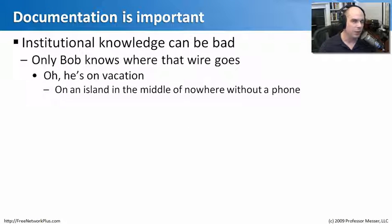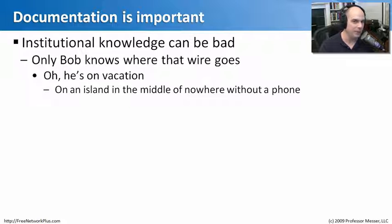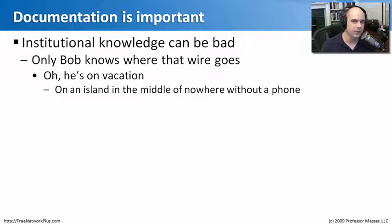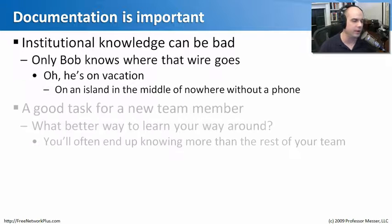Documentation becomes very important in larger environments where there is institutional knowledge — one person who knows how everything works. Bob knows where that wire goes, and only Bob happens to know. The bad part comes when Bob isn't there. Bob goes on vacation, somewhere in the middle of nowhere with no phone and no way to get in touch. Do we all just sit around until Bob gets back? That doesn't make a lot of sense. We need some way to document what's on our network.